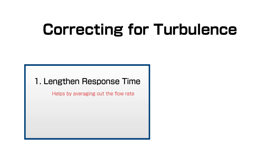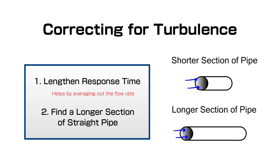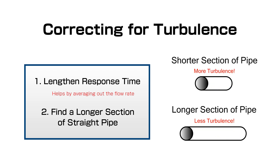The second thing to do is to maximize the amount of uninterrupted straight piping before and after the location where the flow meter is mounted. The more straight piping going into and out of the meter, the more laminar the flow will be, which is ideal for accuracy.